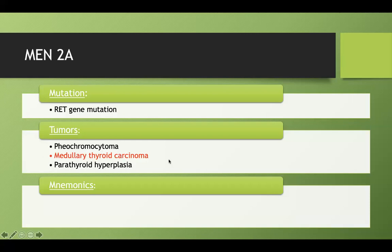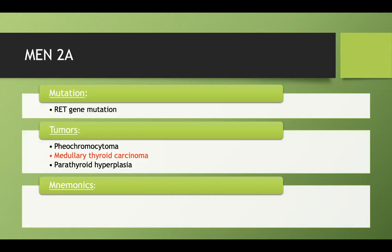On tests, they might describe a neck mass with a biopsy showing overproduction of a substance from your C cells or parafollicular cells, and you have to infer that's medullary thyroid cancer. They might also ask what other tumor is associated with the same syndrome — so you'd need to know that pheochromocytoma is also associated. They have these tricky, indirect ways of testing sometimes.